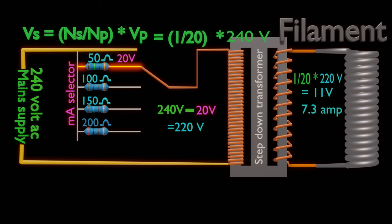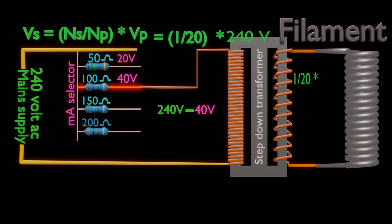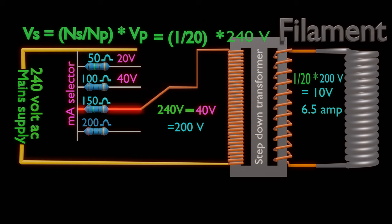Let's switch to 100 ohm resistor. Let there be a voltage drop of 40 volts across the resistor. Voltage available across primary winding will be 200 volts. Voltage across secondary will be 10 volts. Let's say it leads to a filament current of 6.5 ampere. Similarly, with switching of other two resistors, we can alter filament current to a certain value.